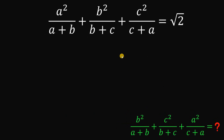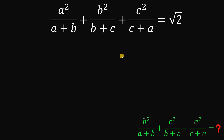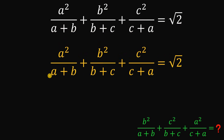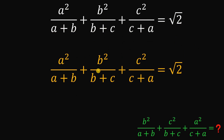All right, so this looks scary but this is very simple. To answer this, let's take the equation: a squared over a plus b, plus b squared over b plus c, plus c squared over c plus a, equals square root of 2.